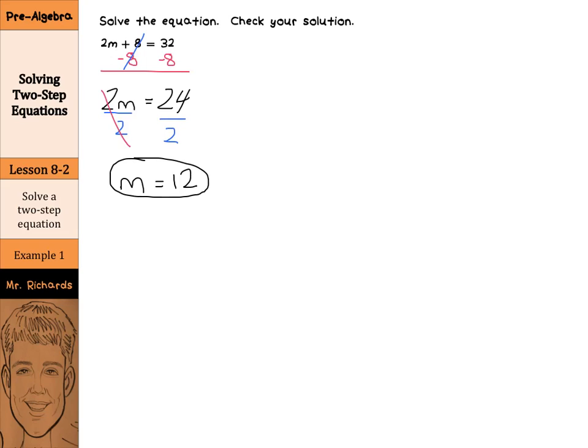Now, it does say to check our solution. So as we write our check step, we always start with the original equation 2m plus 8 equals 32. Substitute in 12 for m. 2 multiplied by 12 is 24, plus 8 equals 32, and 24 plus 8 is 32. So 32 equals 32. Our solution of m equals 12 is correct.